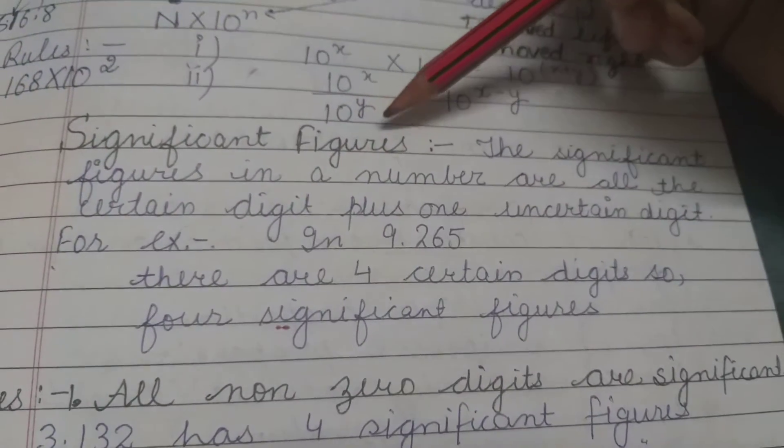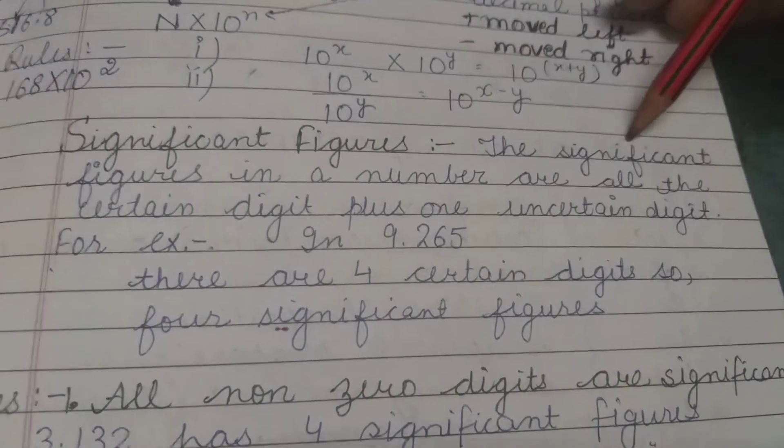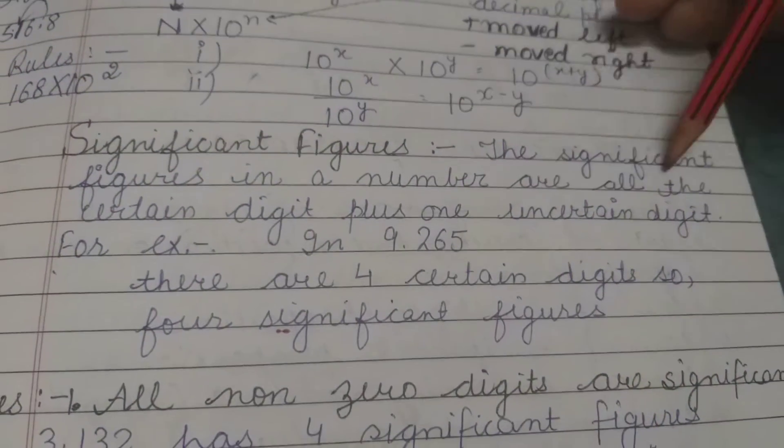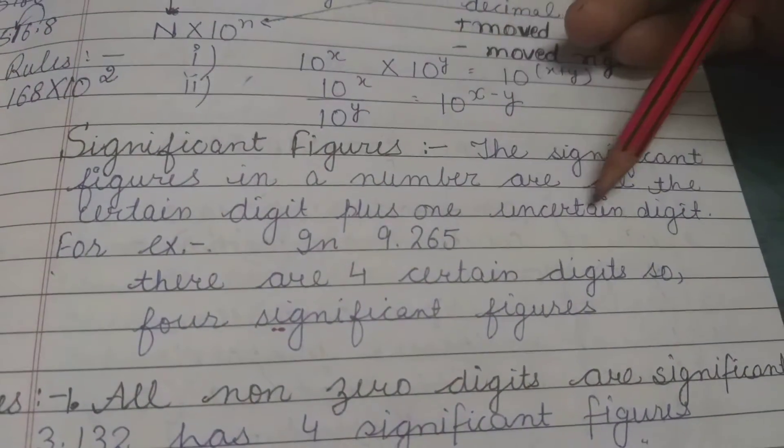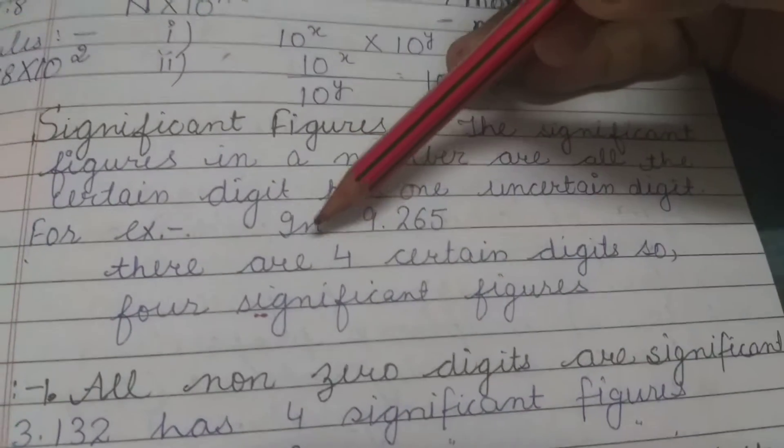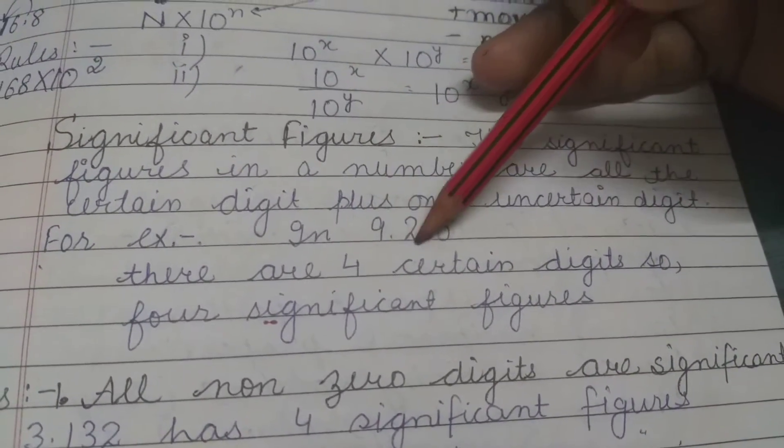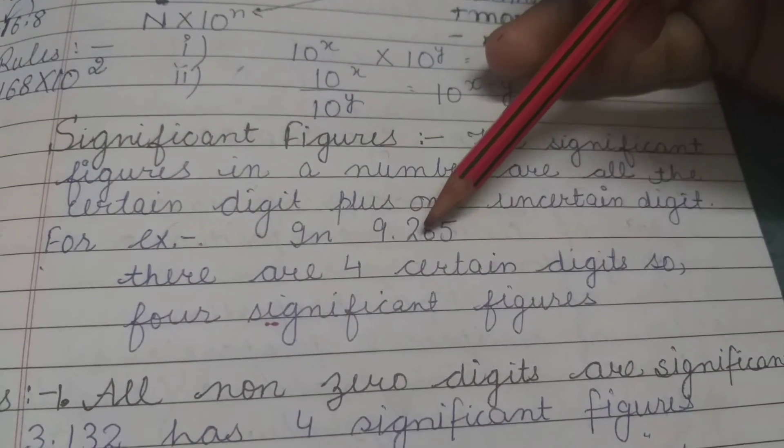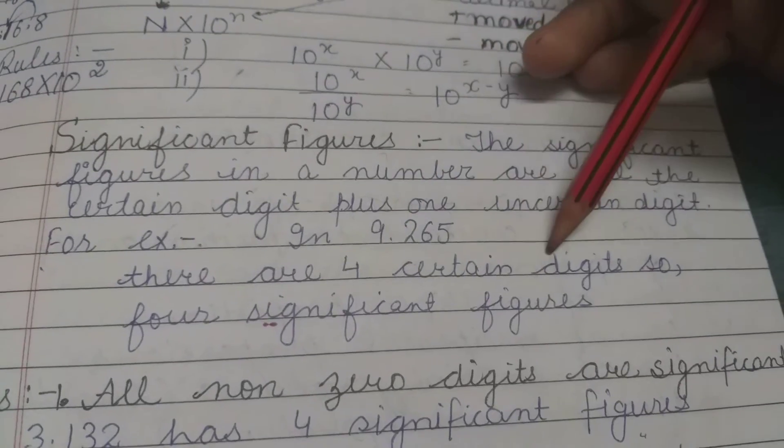Okay, so our next topic is significant figures. Significant figures in a number are all the certain digits plus one uncertain digit. In this example, 9.265, we have one, two, three, and four—four certain digits.